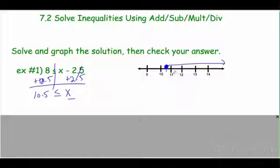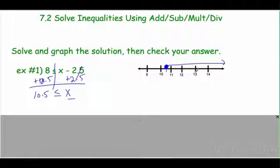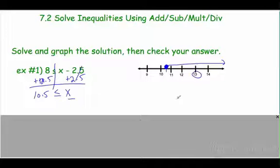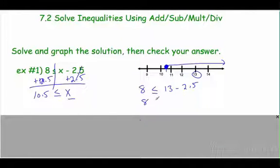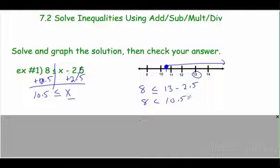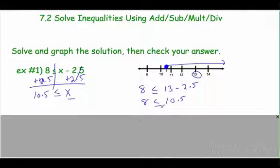Now let's check the answer. Here's the difference between an equation and an inequality — I have all these different answers. Yes, 10 and a half works, but so do 11, 12, 13, 14, 15, 100 — all of them work. I'm going to use 13. Is 8 less than or equal to 13 minus 2 and a half? That's 10.5. Is 8 less than or equal to 10.5? It sure is. Everything checks out.